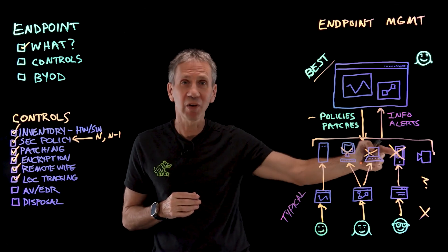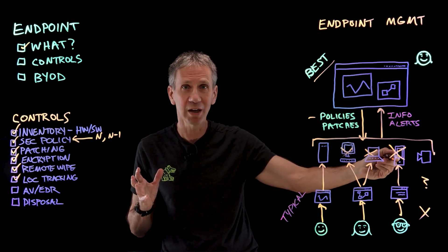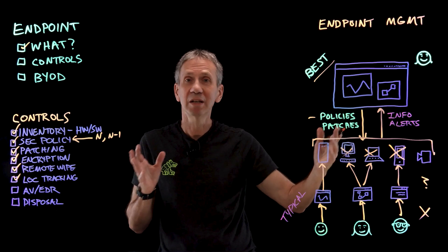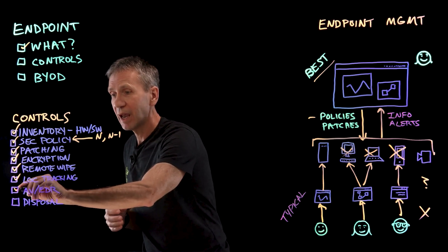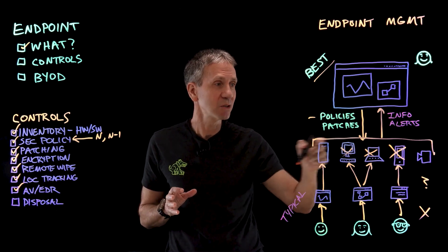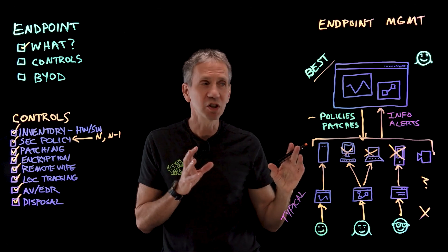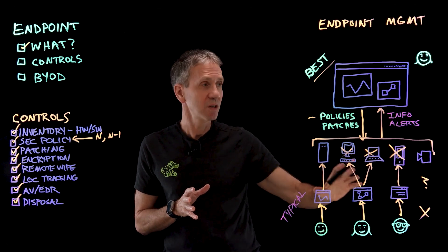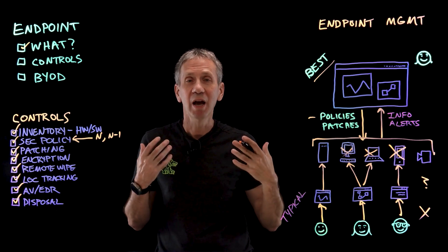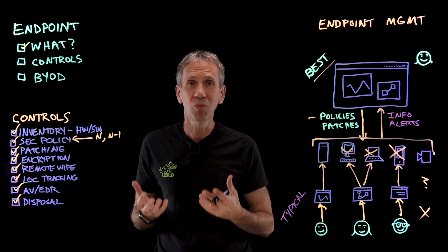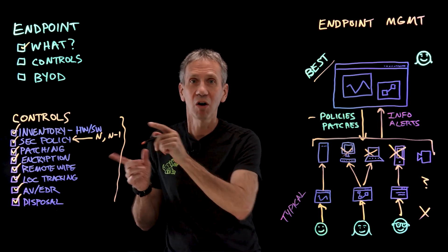Location tracking can help find a missing device, though some organizations may choose not to enable this for personal devices — which is understandable. But the capability exists, certainly for corporate devices. Antivirus or endpoint detection and response ensures we don't have malware on these systems. And finally, we need a policy for disposing of these devices — how do we get rid of a device in a way that doesn't expose our information?